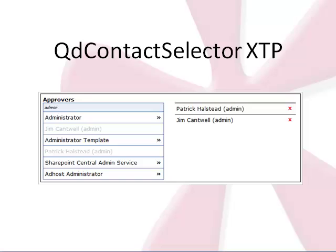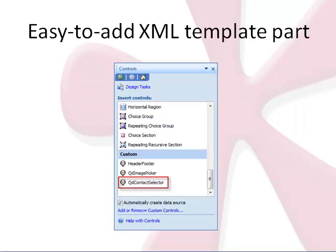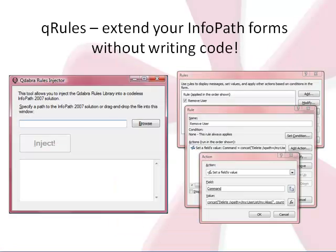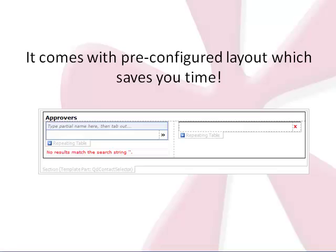As a solution to all those limitations, Kadabr created its own contact selector. It is a template part and therefore easy to add in your forms via the InfoPath Designer. It uses Q-Rules, which lets you add features that require code without having to write it yourself. Simply inject Q-Rules in your form and call the commands via rules. We've designed it for you.